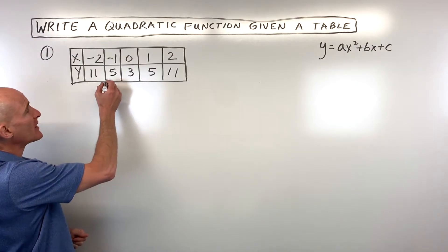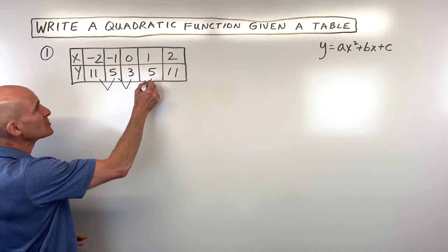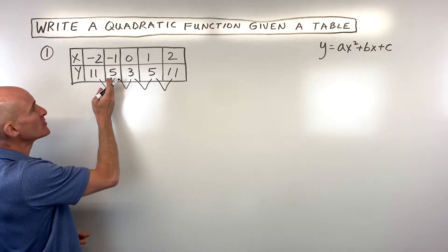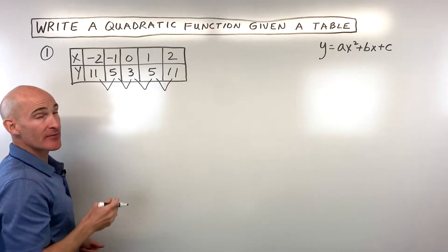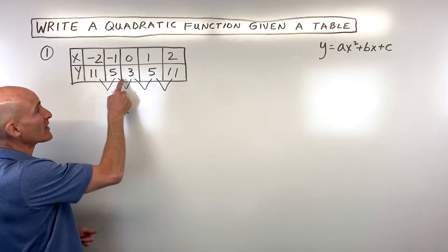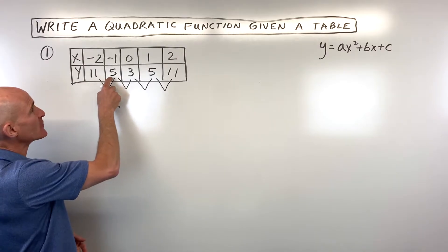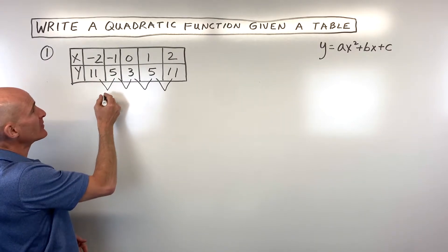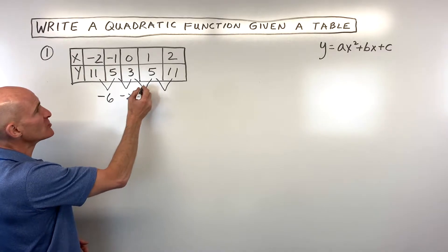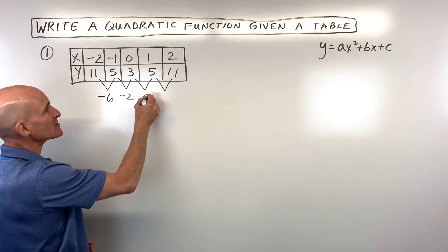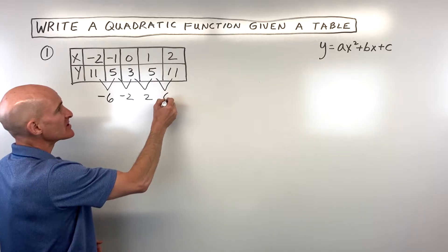The way you do that is you subtract these y values. You want to make sure you're consistent — either do right minus left every time, or left minus right, but stay consistent. I always do right minus left. So 5 minus 11 is negative 6, 3 minus 5 is negative 2, 5 minus 3 is 2, and 11 minus 5 is 6.